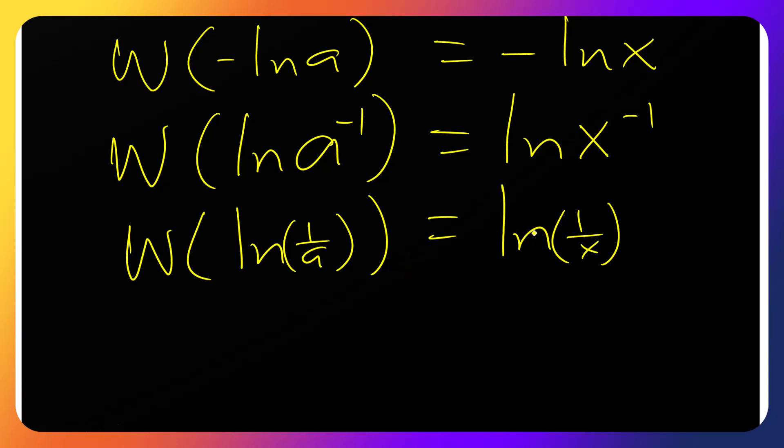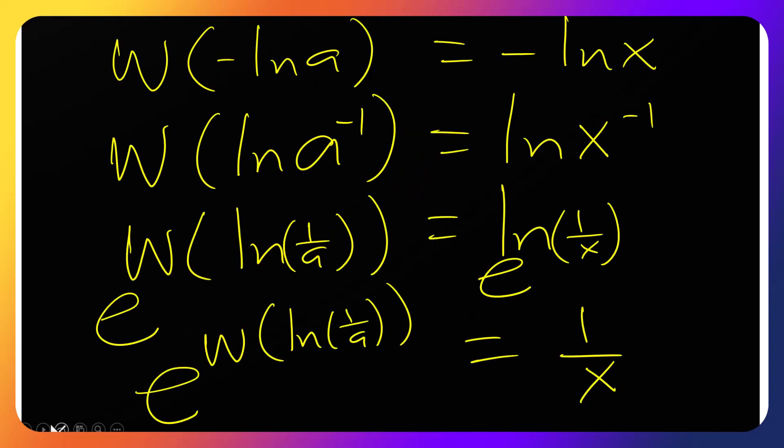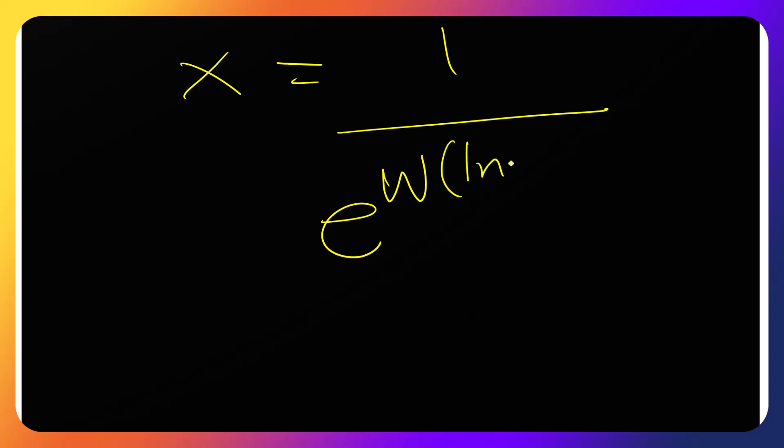All right, so to remove the ln we have to raise both sides with e. E and this side will equal one over x equals e raised to the W function of that. Okay, so the final answer will be x equals one over e to the W function of ln of one over a. Okay, simple like that. So that is the answer for x, in terms of W function.